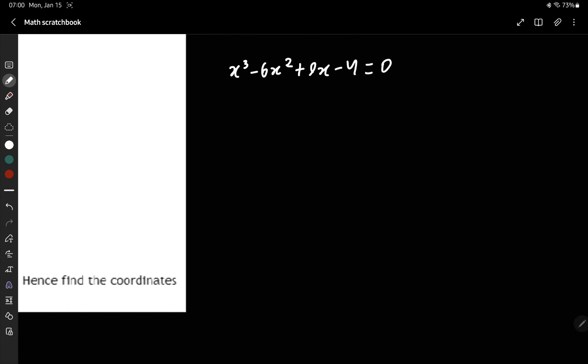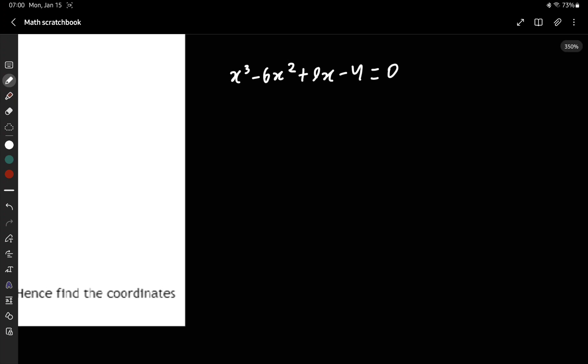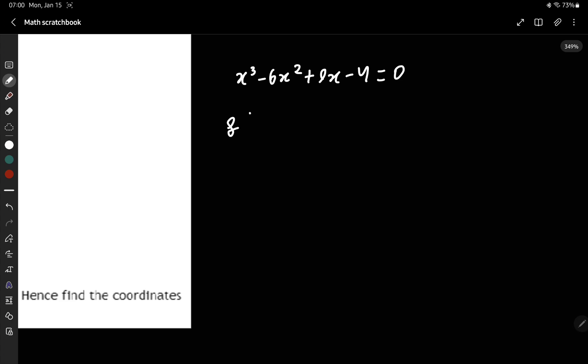What we do to find the factors is plug in different x values into this polynomial to see if it equals zero. f of negative 1 is negative 20, so that's not equal to zero.